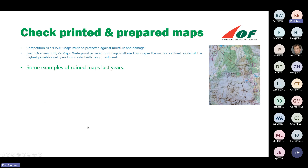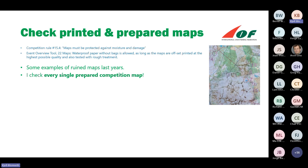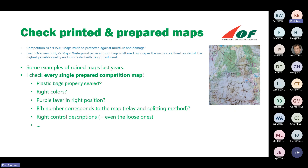The last check is to check the printed and prepared maps. I check every single prepared competition map — all maps that runners will have in their hands are checked by me. I check that the plastic bags are properly sealed, that the colors are right, that the purple layer is in the right position, that bib numbers correspond to the right map in relay and splitting situations, and that the right control descriptions are on the map. I have really found some mistakes through this check, so it's important to do.